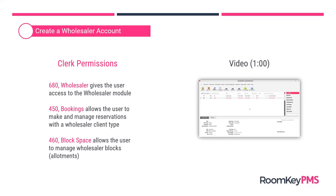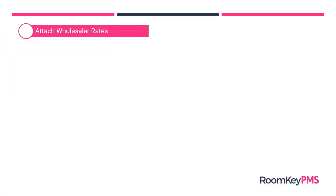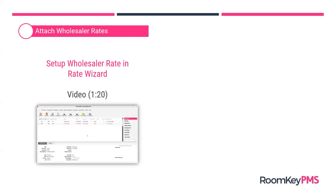Once you've created the account with or without the city ledger attached, the next thing you'll do is attach wholesaler rates. This can be a two-step process because you want to make sure you first have a wholesaler rate set up in your rate wizard. If you'd like to see the full process of creating a rate from beginning to end, we do have a rate wizard webinar that was recorded last year. I have a short video showing the key features you'll need to set up in the rate wizard on that wholesaler rate plan.